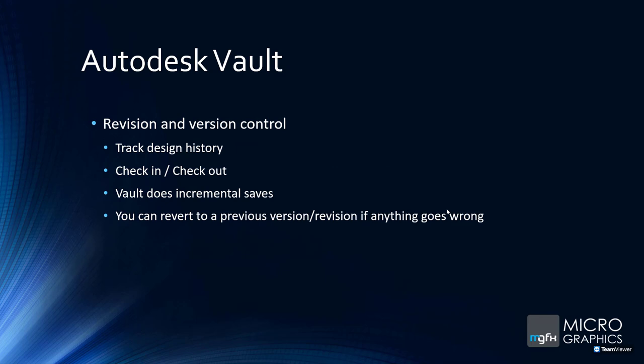Vault Workgroup introduces revision control on top of the version control available in Basic. Version control tracks every check-in and check-out, creating a new version each time. Revision control lets you track design history as files are revised, and you can revert to previous revisions or versions if something goes wrong. Vault uses incremental saves, so it's not a completely new file every time — meaning you don't need terabytes of storage space for all revisions and versions.